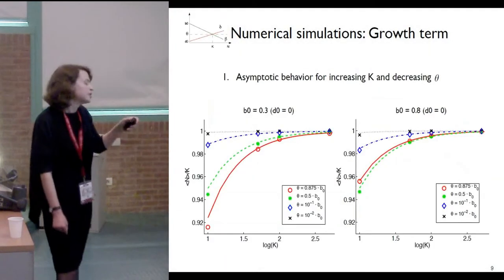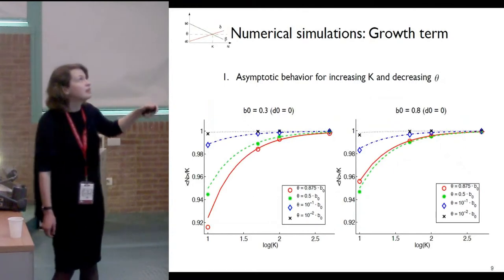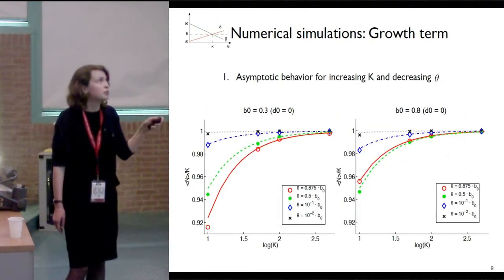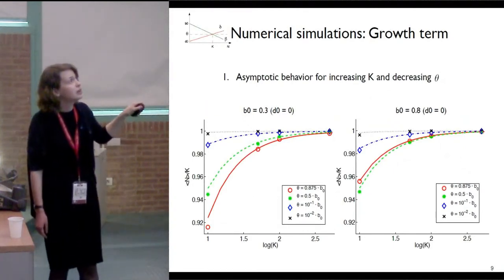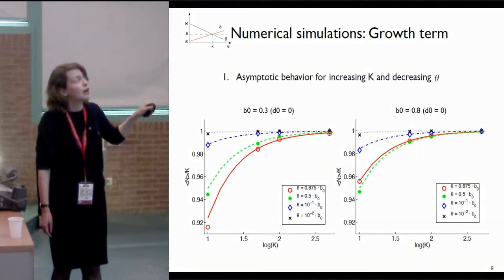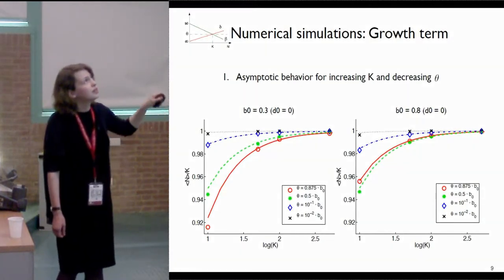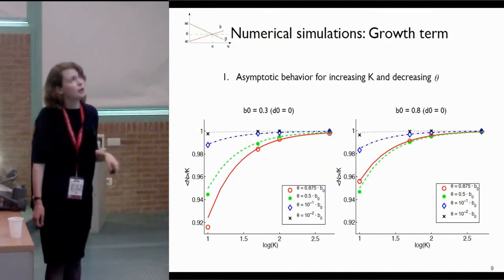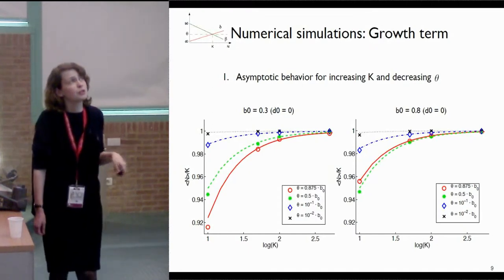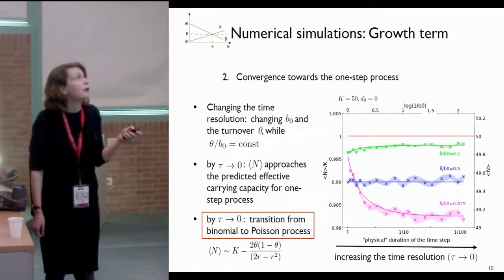To compare this approximation with the simulation results: the approximation is given in lines and the results are given in symbols, for the case of b0 smaller than 0.5 and b0 larger than 0.5. This approximation matches the results quite well.